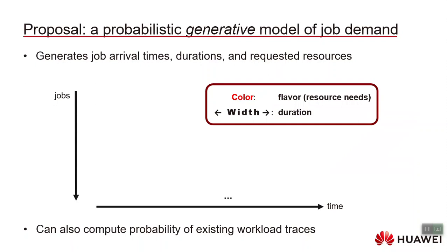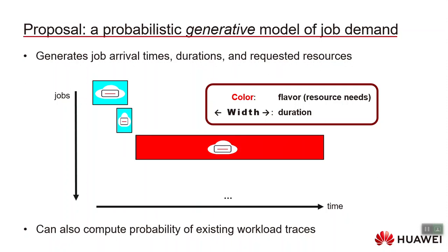In this paper we propose a probabilistic generative model of job demand. Our model generates a trace — a sequence of jobs each with an arrival time, a duration, and a set of requested resources. We visualize the requested resources with a color representing the flavor of the job, and the width of the box represents the duration. We can also use our model to compute the probability of an existing workload trace, and we train our model to maximize the likelihood of existing historical data.